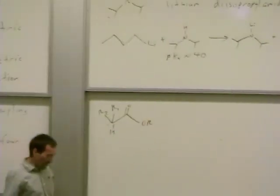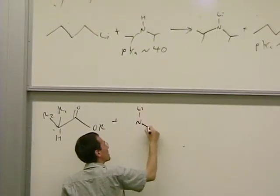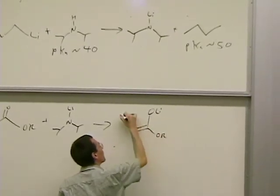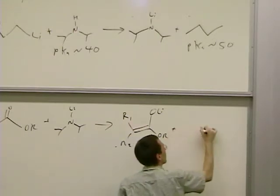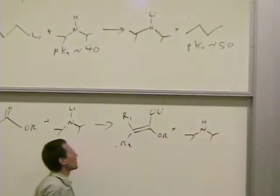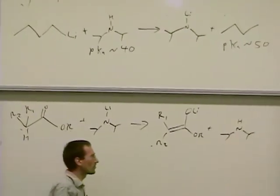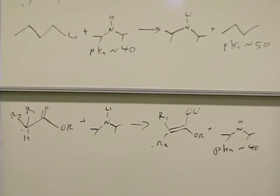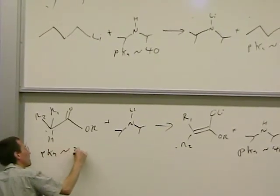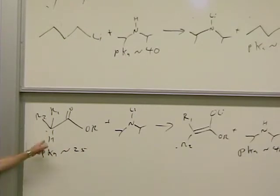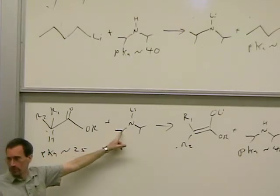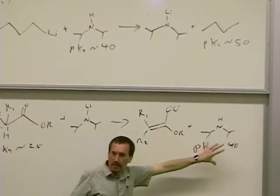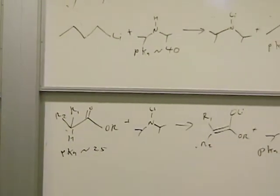The other thing that's really good about LDA is it's sterically hindered. The two isopropyl groups make it bulky, which means it's good at pulling off protons which are very small, but it's not a very good nucleophile. We generate our LDA by reaction of n-butyl lithium and diisopropyl amine. Butane is the other product of reaction. As I was saying, n-butyl lithium is a very strong base. The pKa of butane is about 50. The pKa of diisopropyl amine is about 40. You have a super strong base reacting with a very weak acid to give something that's still a strong base plus a very, very weak acid. Basicity is often a marker of reactivity.